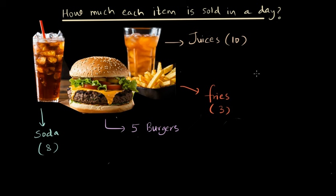Which item has the largest demand? That's what you need to know. In such cases, you already have data. For example, let's say eight sodas were sold in a day, five burgers, three fries, and ten juices. Clearly, the demand for juices was the most, and below that, soda had the highest demand.